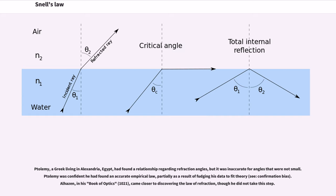Ptolemy, a Greek living in Alexandria, Egypt, had found a relationship regarding refraction angles, but it was inaccurate for angles that were not small. Ptolemy was confident he had found an accurate empirical law, partially as a result of fudging his data to fit theory.